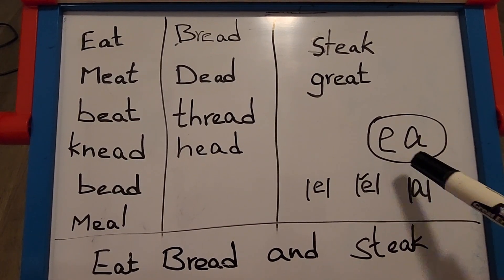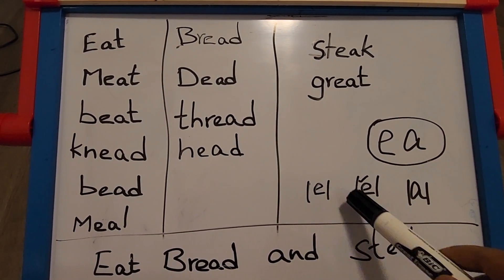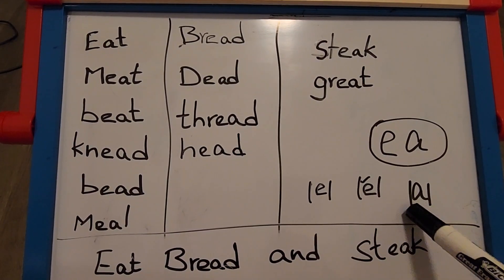Here, EA actually makes three different sounds: long E, short E, and the letter A sound.